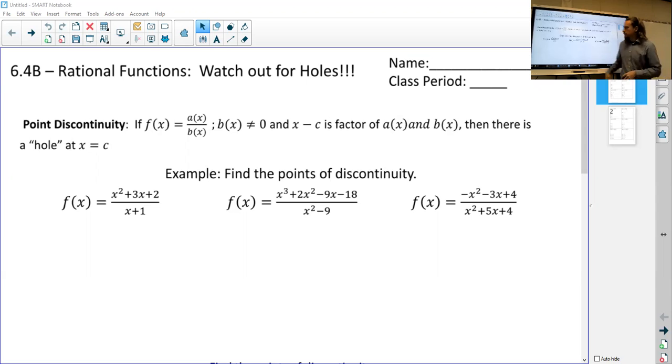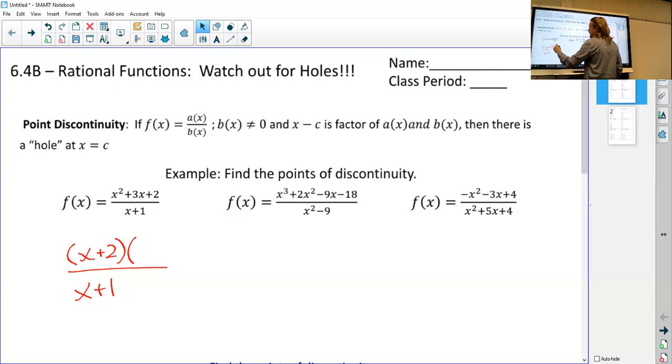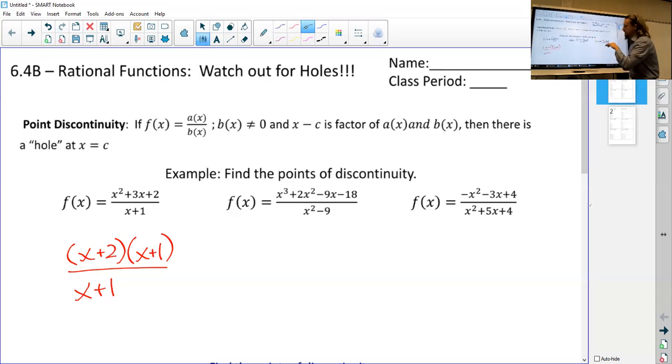If I like my first example, x squared plus 3x plus 2 over x plus 1, I can't mess with the bottom at all. That's just x plus 1. But on top here, I can say this is going to be x plus 2 and then x plus 1. So then we see we have an x plus 1 in common, and then that becomes our key here.